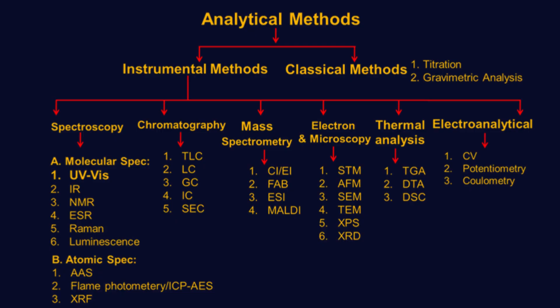Electron and microscopy analysis techniques include scanning tunneling microscope STM, atomic force microscope AFM, scanning electron microscope SEM, transmission electron microscope TEM, X-ray photoelectron spectroscopy XPS, and X-ray diffraction XRD, providing surface and structural information at the atomic level.